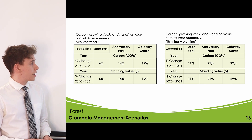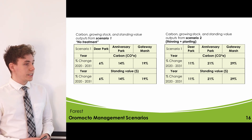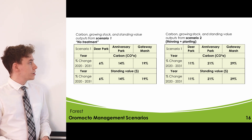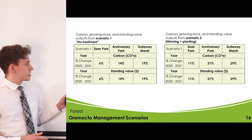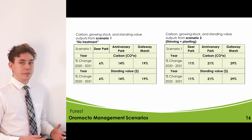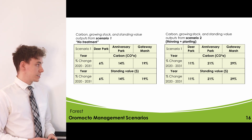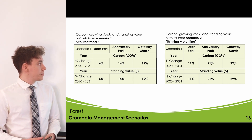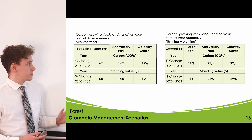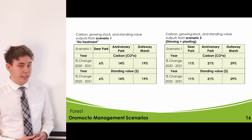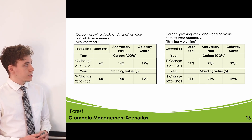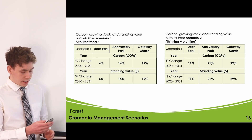The left chart shows Scenario 1 with no treatments and the right shows the maximized carbon scenario. Carbon sequestration and standing value show the same percent change as both are generated from the growing stock. Under Scenario 1, carbon storage and standing value increased by 6% in Deer Park, 14% in Anniversary Park, and 19% in Gateway Marsh. Under the maximized carbon scenario, Deer Park increased by 11%, Anniversary Park by 21%, and Gateway Marsh by 29%.